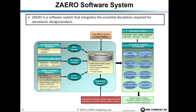The first module in ZAERO is called the high-fidelity geometry module, and it generates the aerodynamic model we call a panel model. The next one is called the 3D spline module. It interpolates the structure deformation or motion from the structure grid to the aerodynamic panel grid. The next one is called the unified AIC — unified aerodynamic influence coefficient matrix module — and you compute the AIC matrices at various Mach numbers and reduced frequencies.